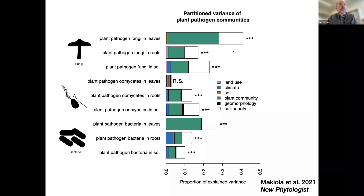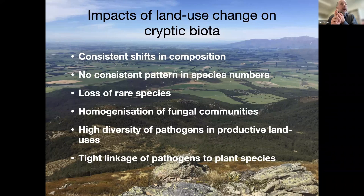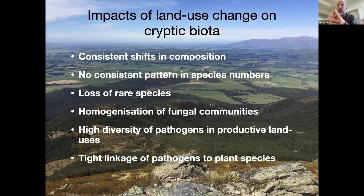So to put that together: what does land use change do? We're seeing consistent shifts in composition of all life but no consistent pattern in species numbers — sometimes diversity goes up, sometimes it goes down. However, in every case what we see is a loss of rare species: homogenization of fungal and other communities. We're also seeing really high diversity of pathogens, consistent with the idea of exotics actually building up pathogens in productive land uses, and those changes in pathogens are very much linked to the exotic plant species.